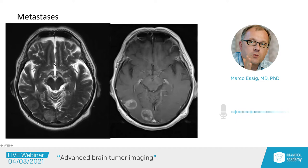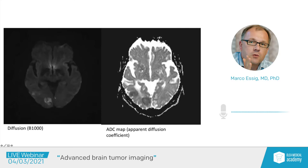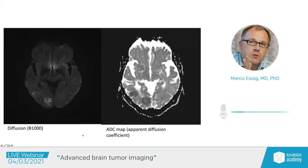Here we see a patient with multiple rim-enhancing intraaxial mass lesions. The patient has a known primary, so we suspect metastatic disease. You see the enhancement pattern and T2 changes, and when we apply diffusion-weighted imaging, we see restricted diffusion specifically along the enhancing margins — the active lesion part where there is high cellular density and active growth. Those areas are restricting, which is a very important tool to better delineate these lesions, helpful for treatment planning.